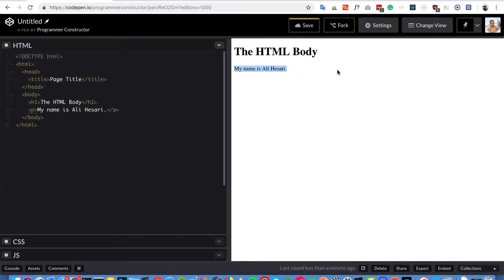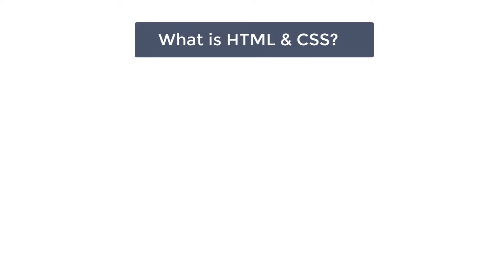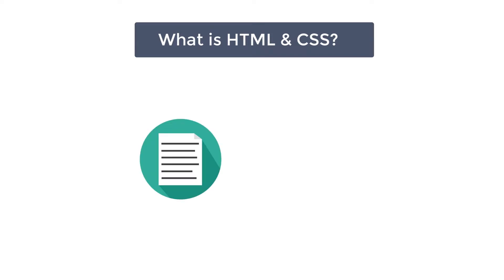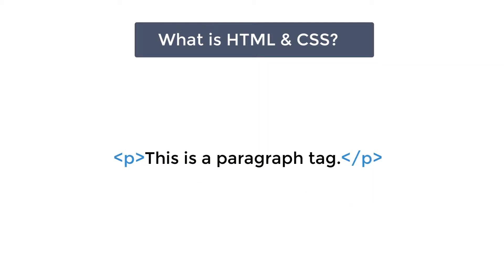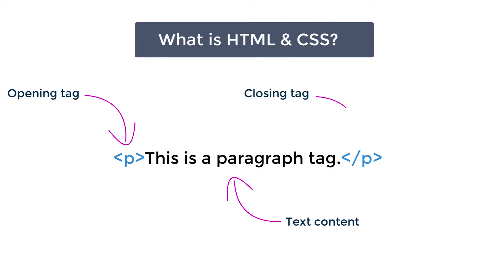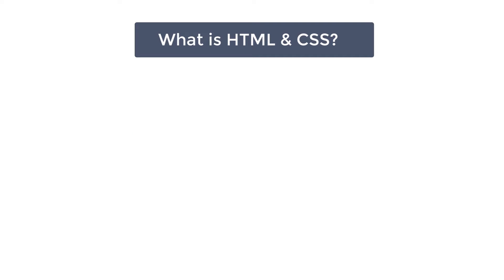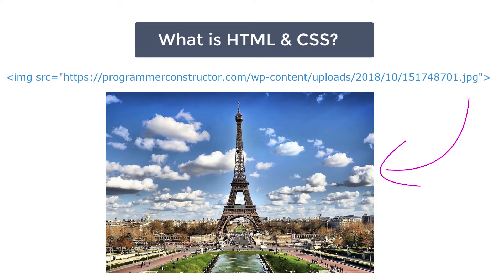An element may contain a data item, text, an image, or perhaps nothing. A typical element includes an opening tag, enclosed text content, and a closing tag. Each tag begins and ends with angle brackets. There are also a few empty or void tags that cannot include any text — for instance, the image tag.